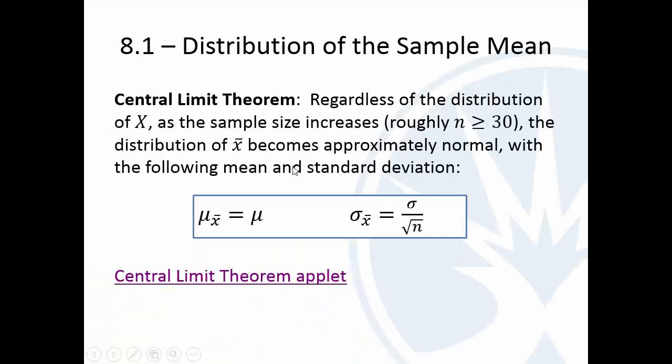So this is a huge result. You're going to want to write these formulas down. You're not going to be provided these. If we're looking at the distribution of a sample mean, the mean of the sample means is the same as the mean of the population, μx̄ = μ. But the standard deviation of the sample means is smaller. In fact, it is the population standard deviation divided by the square root of the sample size, σx̄ = σ/√n. So the larger the sample size, the smaller this standard deviation of the sample mean becomes.